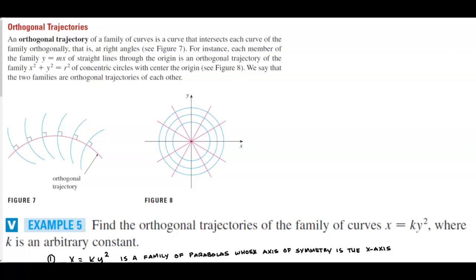Orthogonal trajectories. An orthogonal trajectory of a family of curves is a curve that intersects each curve of the family orthogonally, that is at right angles.